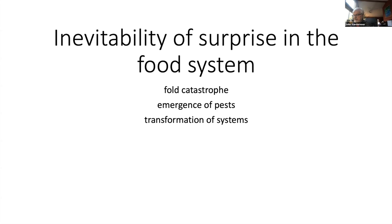Today I will share with you the idea of a fold catastrophe — basically a mathematical concept — then talk about pests and their natural enemies as an example, and then give a speculative idea about institutional transformation.